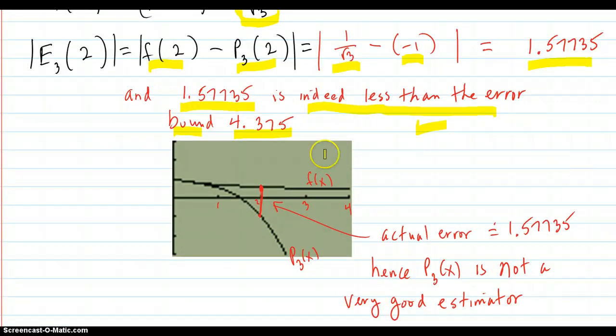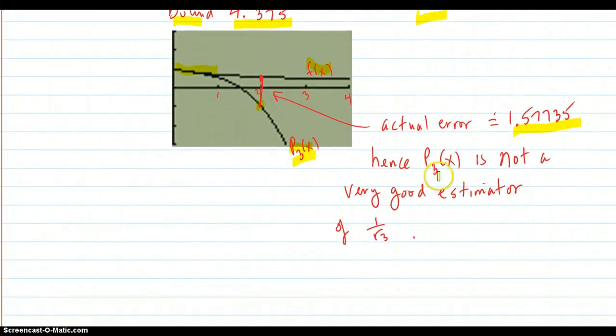And here's a picture of what's happening. This is the function f of x. This is the P3 of x. It fits it for a while. But by the time you get to 2 you get this P3 is negative 1. And the function value is right way up here. So that's a pretty bad error there.